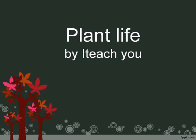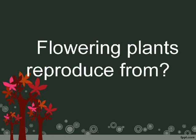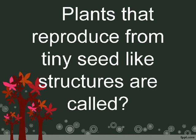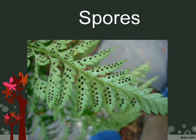Plant life. Flowering plants reproduce from seeds. Plants that reproduce from tiny seed-like structures are called spores.